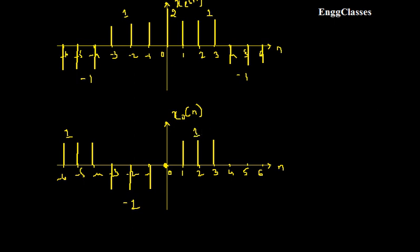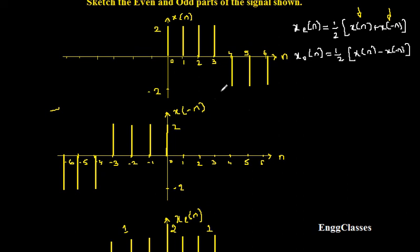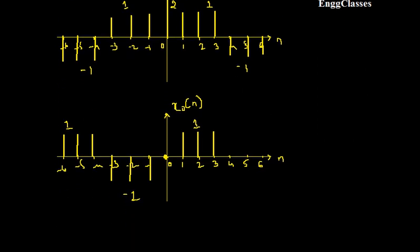At positions 4, 5, and 6, x(n) has amplitude minus 2 and x(-n) has nothing — minus 2 minus 0 gives minus 2, divided by 2 gives minus 1. So at positions 4, 5, and 6 the odd part has amplitude minus 1. This is how the odd part of the signal x_o(n) finally looks like.